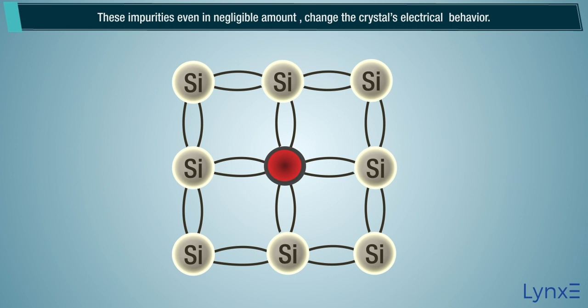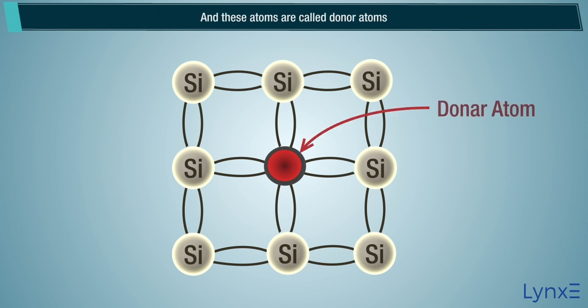These impurities, even in negligible amount, change the crystal's electrical behavior. And these atoms are called donor atoms, since they yield electrons to the crystal lattice of silicon.